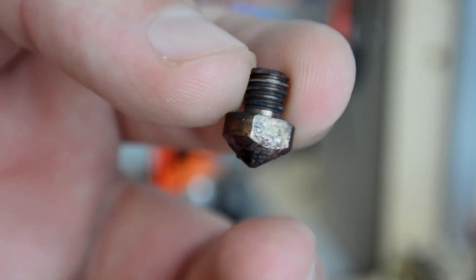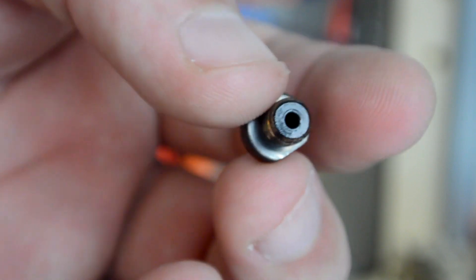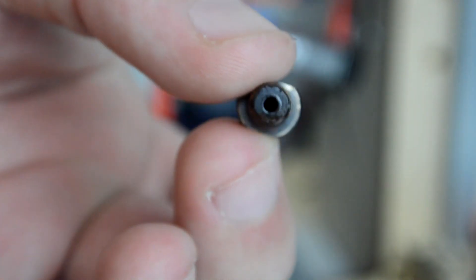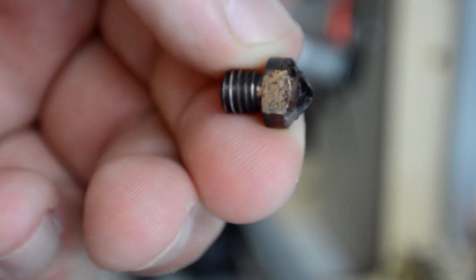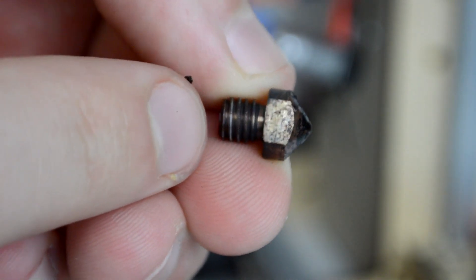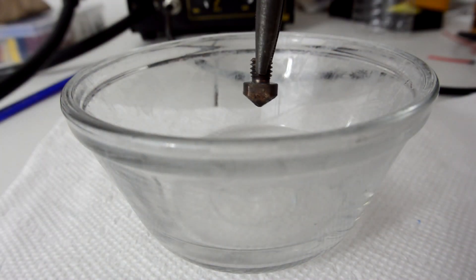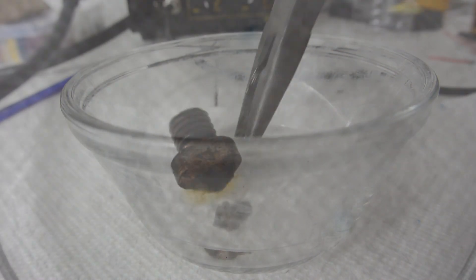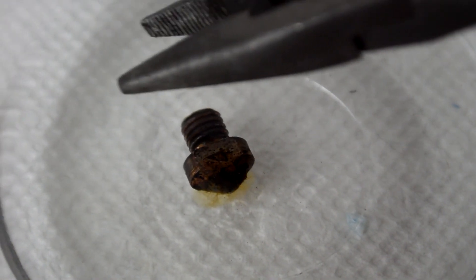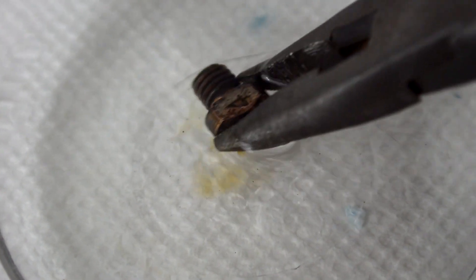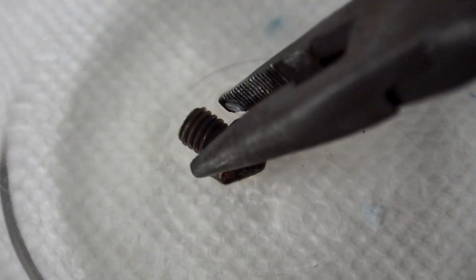So here's the nozzle removed from the hotend. And of course, you're not going to be able to see through it at all because it is in fact jammed. So the first step is since I've been using primarily ABS in here, I'm going to soak this tip in acetone and hopefully the acetone will start to dissolve some of the ABS that's stuck in there and give me a better chance on removing whatever clogged this nozzle.